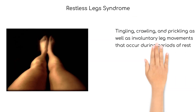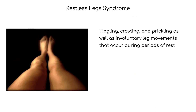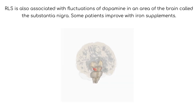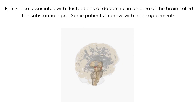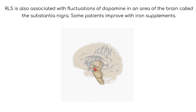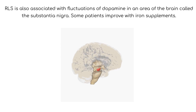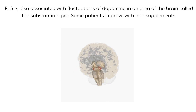Restless leg syndrome, RLS, also known as Willis-Ekbom disease, is associated with sensations such as tingling, crawling, and prickling, as well as involuntary leg movements that occur during periods of rest. RLS is more common in women and the elderly, and can occur during pregnancy and with iron deficiency. RLS is also associated with fluctuations of dopamine in an area of the brain called the substantia nigra. Iron is involved in dopamine production, and some patients improve with iron supplements.